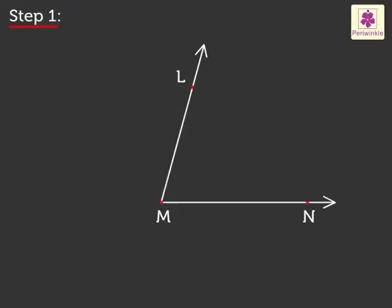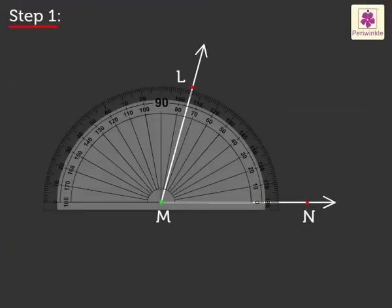Now, let's revise how to measure an angle. Measure the angle LMN. Step 1: Place the central point of the protractor on the vertex M such that the zero degrees line coincides with ray MN. Step 2: